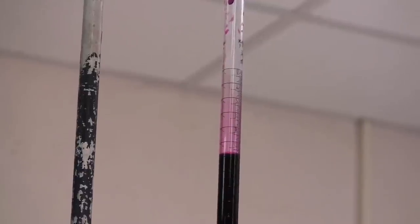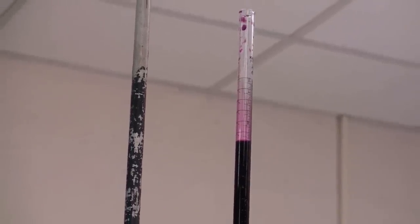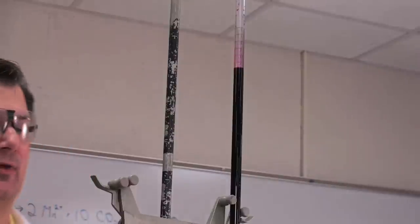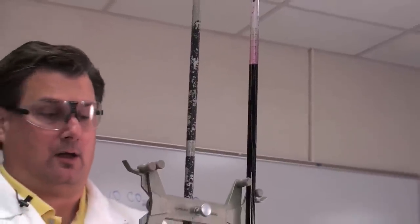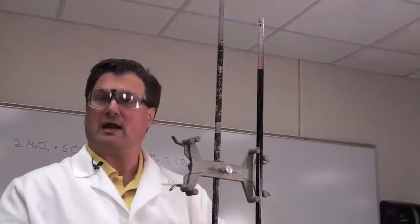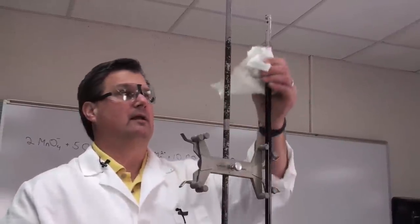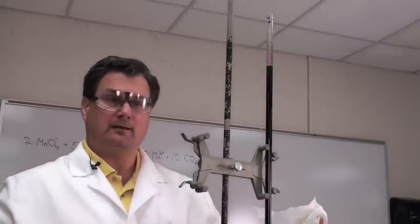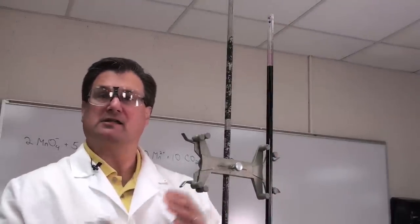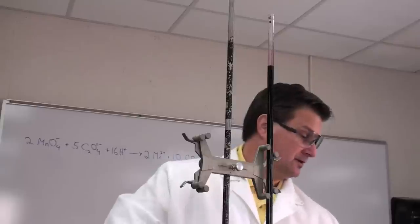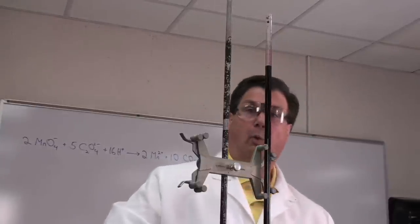It's a better idea not to shoot for exactly zero. Why? Because if we're shooting for a particular target, we're often predisposed to think we've hit that target. It's better to just fill to somewhere near the top and then objectively read the point to which we filled. Since volumes are measured by difference, it doesn't matter. Zero minus five is the same as one minus six, so it's not critical what we fill it to.